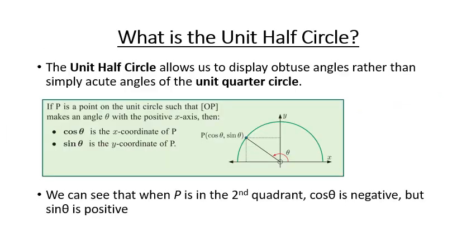Now we can also use what we call the unit half circle, which is again the first and the second quadrants of our circle, and we can use those to work out the sine and the cosine of different angles.